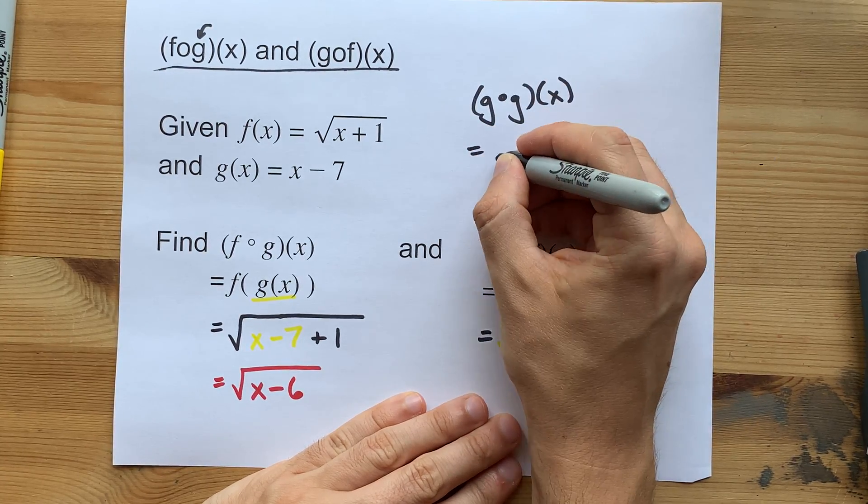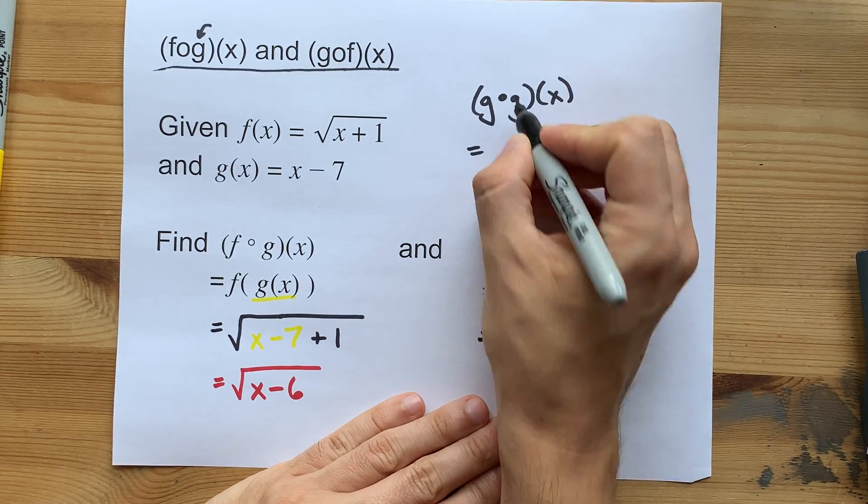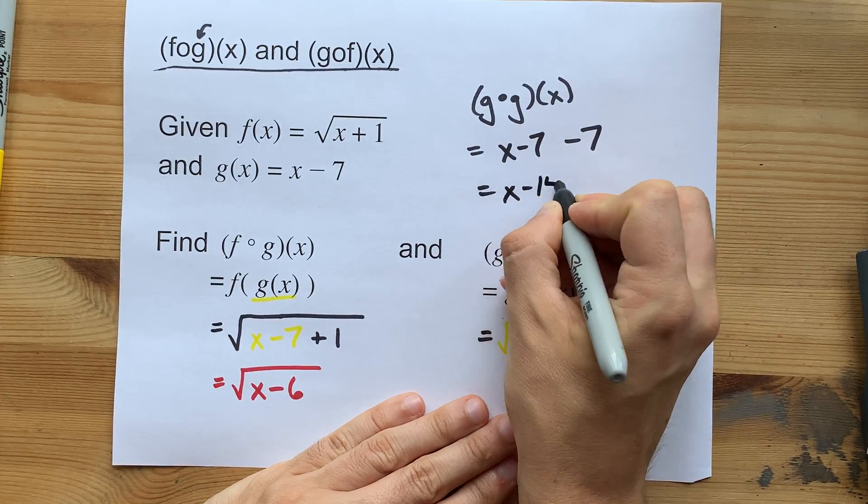So you copy out g, x minus 7. But instead of x, you write g, which is x minus 7. You end up with x minus 14.